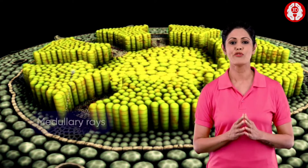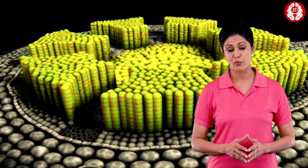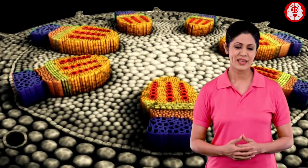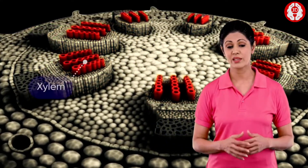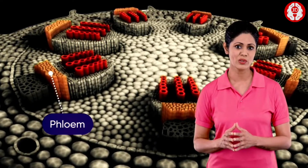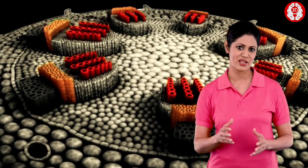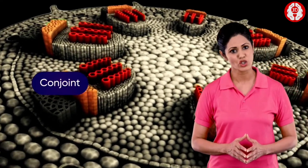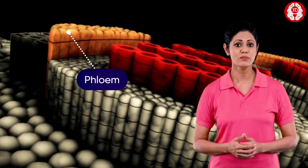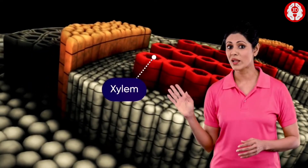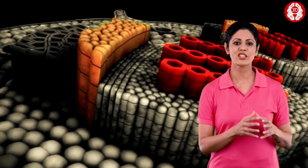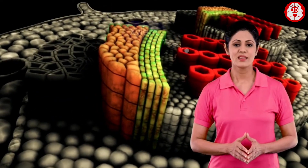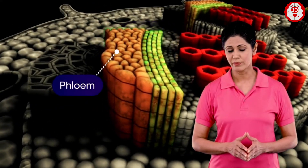The parenchymatous cells connecting the pith and the parenchymatous pericycle form the medullary rays, which radiate between the vascular bundles. In each vascular bundle, the xylem and the phloem tissues are located on the same radius, and hence the bundle is described as conjoint. The phloem being located on only one side of the xylem, the vascular bundle is described as collateral.